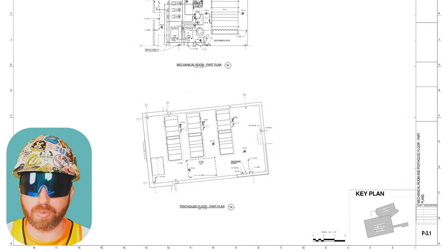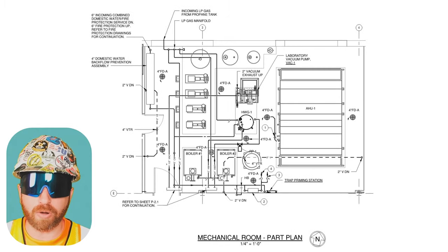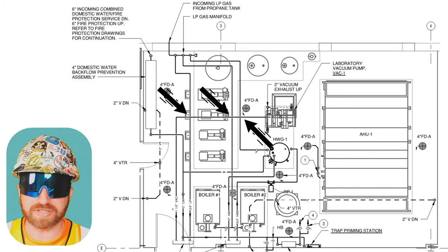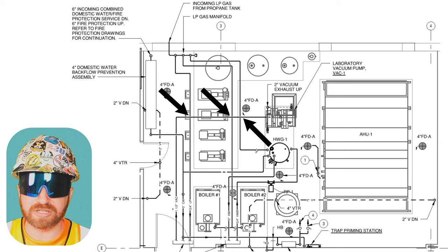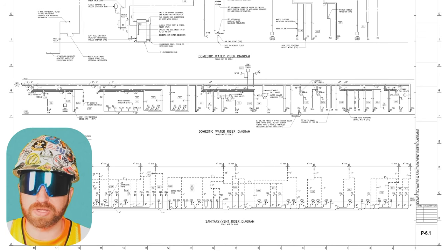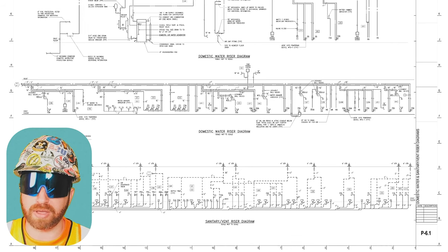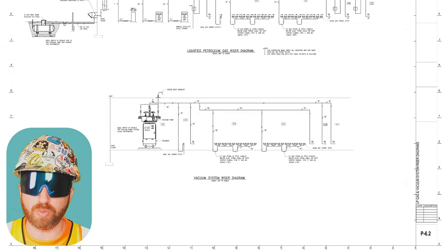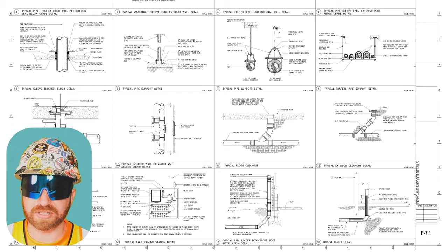Jumping ahead to P-3.1 mechanical room and penthouse floor, we see how our piping hooks up to our equipment. At this intersection, these pipes don't actually connect — they're just passing by one another. The solid line typically indicates that this pipe is above these other pipes. Moving on to P-6.1, we see our riser diagrams, showing yet another view of how the piping, valves, and equipment should be installed. We have two for domestic water and one for sanitary vent risers on this drawing page. On the next page, sheet P-6.2, we've got the same thing except it's for gas and our vacuum system. Then P-7.1 gets us into the details of various pipe hangers and penetration conditions.